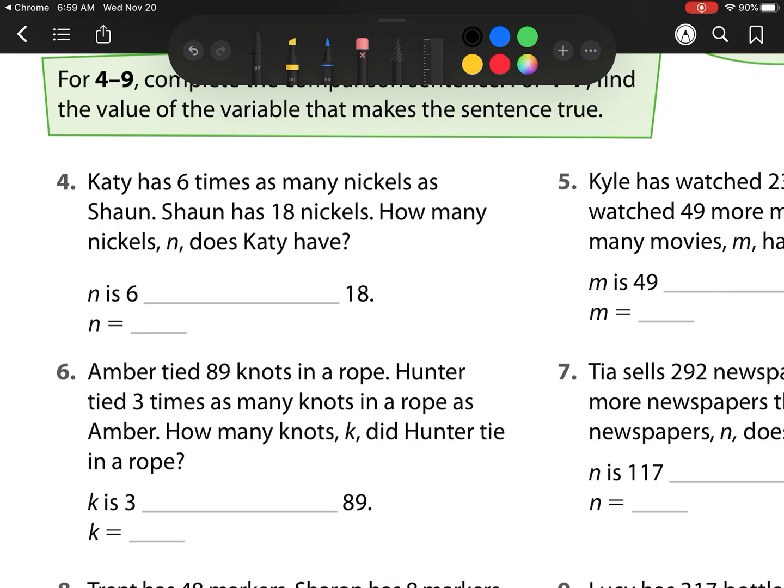Katy has 6 times as many nickels as Sean. Sean has 18 nickels. How many nickels N does Katy have? Well, we know that we have 6 times as many, so this is a multiplication problem. So we put N, our mystery number, is 6 times as much as 18. We have N equals 6 times 18. So what do we have? We have 18 times 6, and so now we're going to do our multiplying. Regroup that for 108. So she has 108 nickels.